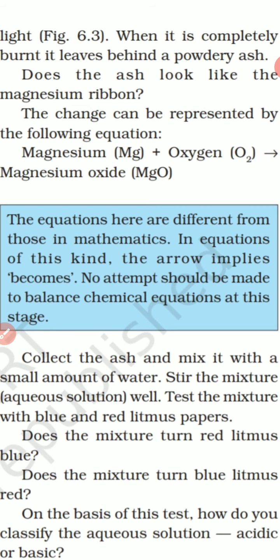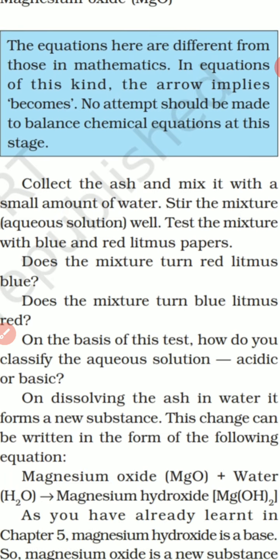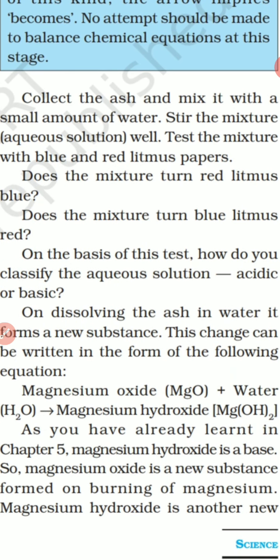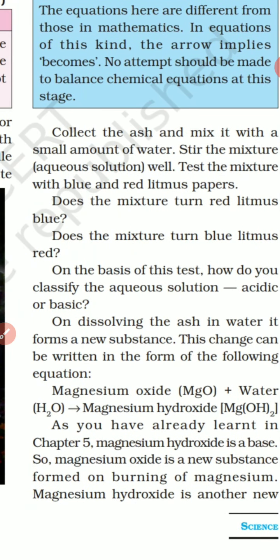You can explain it in equation like this: magnesium oxide MgO plus water that is H2O, what will be formed? Mg(OH)2, that is magnesium hydroxide. And in chapter 5 we have already learned that magnesium hydroxide is a base. So it is a new substance formed by burning magnesium.